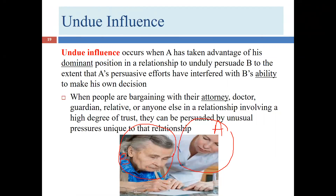Party B doesn't have to be an elderly person, but people in vulnerable positions are usually the potential victims of undue influence — the elderly, the very young, the unsophisticated, people with physical or intellectual disabilities, or people experiencing mental health issues. It might also be someone who is ill, has experienced financial reversals, or is going through grief — circumstances that put someone in a vulnerable position.